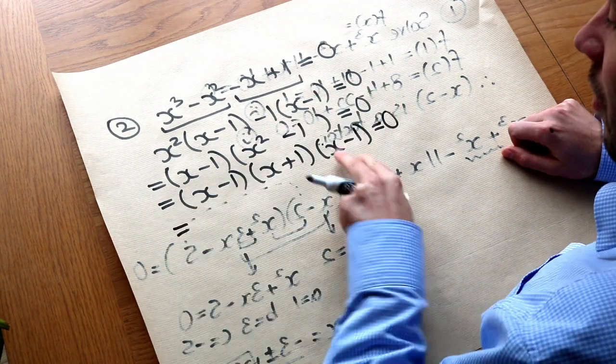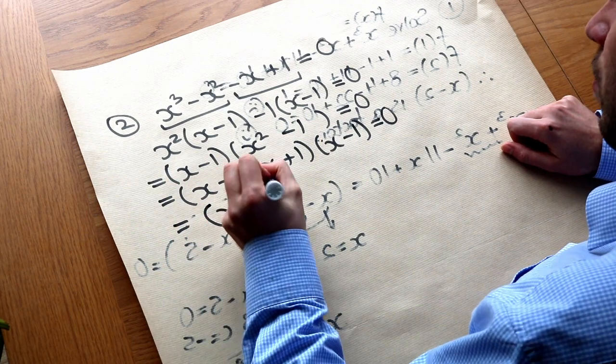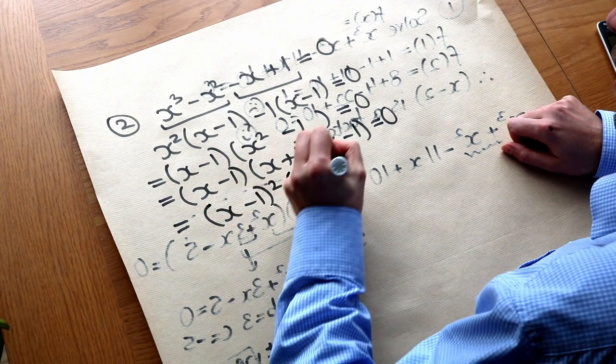And then we can see there's a repeated factor of x minus one. So it's x minus one squared, and x plus one is equal to zero.